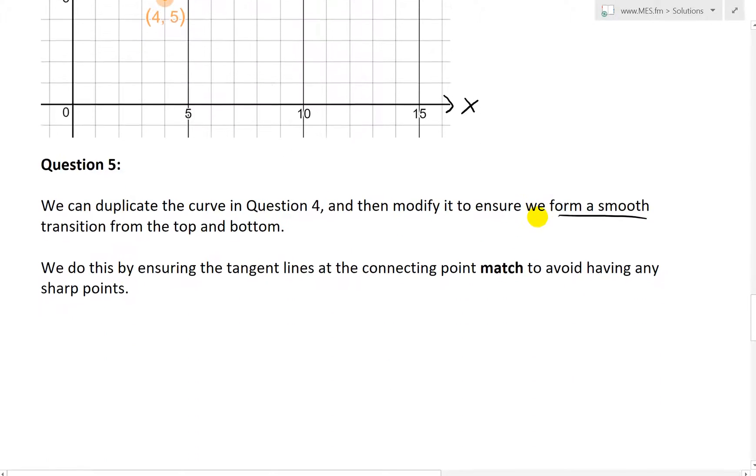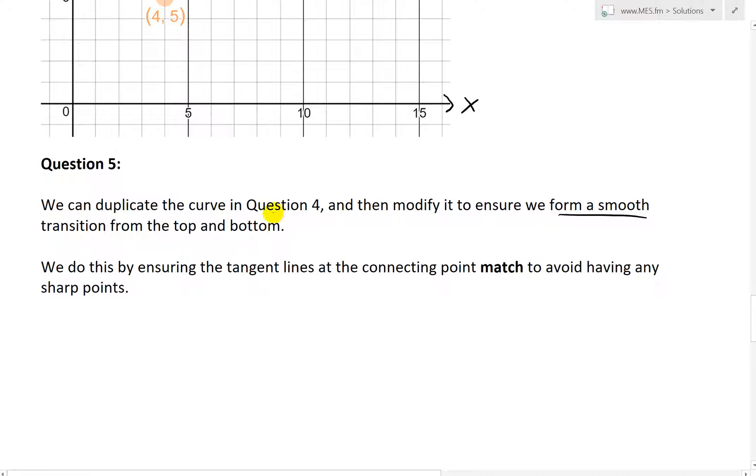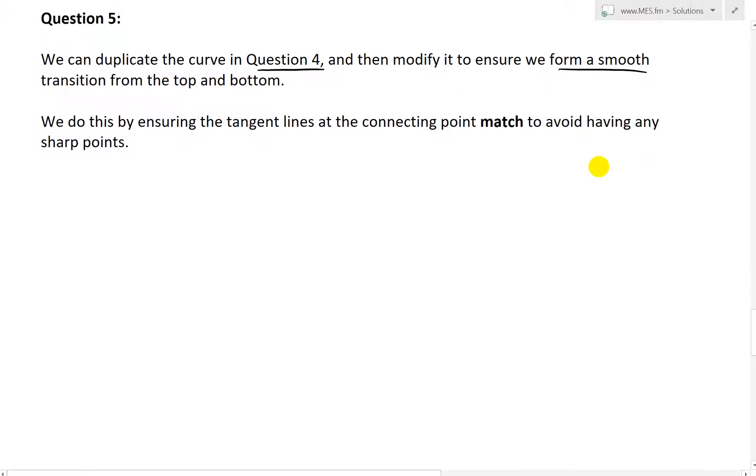So what we could do is, in question five, we can duplicate the curve in question four and then modify it a bit to ensure we form a smooth transition from the top and bottom. And we do this by ensuring the tangent lines at the connecting point match to avoid any sharp points.